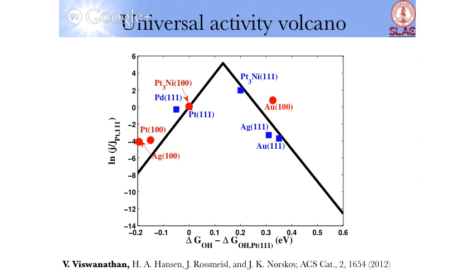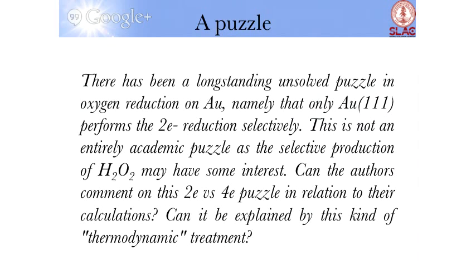We sent this manuscript up and got a very insightful reviewer comment. The reviewer comment was: there's been a long-standing unsolved puzzle that oxygen reduction on gold 101 performs the two-electron reduction selectively.